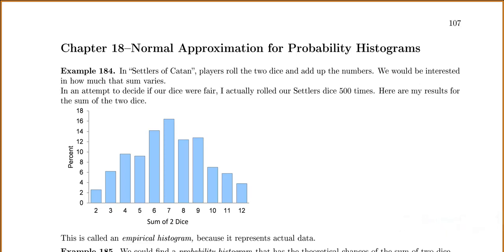Chapter 18 is about normal approximations for probability histograms. In our first example from Settlers of Catan, players roll two dice and add up the numbers. We're interested in knowing how much that sum varies. In an attempt to decide if our dice were fair, I actually rolled our Settlers dice 500 times, and here are my results for the sum of the two dice.